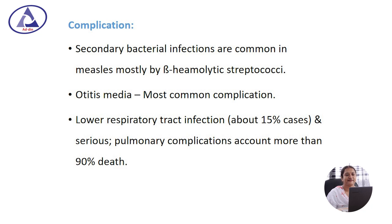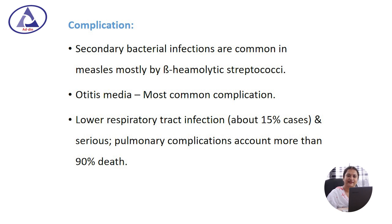Complications of measles virus infection: the most common complication is secondary bacterial infection — that is pneumonia. Secondary bacterial pneumonia is most commonly caused by beta-hemolytic group of Streptococcus. Otitis media is also a most common complication. Lower respiratory tract infection is serious, occurring in 15% of cases, and pulmonary complications account for more than 90% of deaths.